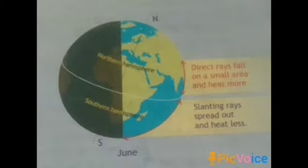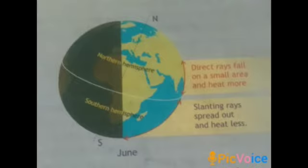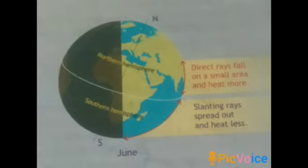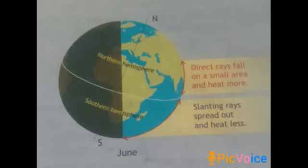The southern hemisphere is tilted away from the sun in June, so they have less heat — the days are shorter and nights are longer. The earth's tilt makes the rays of the sun fall at an angle over the southern hemisphere; these slanting rays spread out over a larger area, giving less warmth, so the southern hemisphere has winter. But in the northern hemisphere the rays of the sun fall more directly, giving more warmth, and they have summer season.